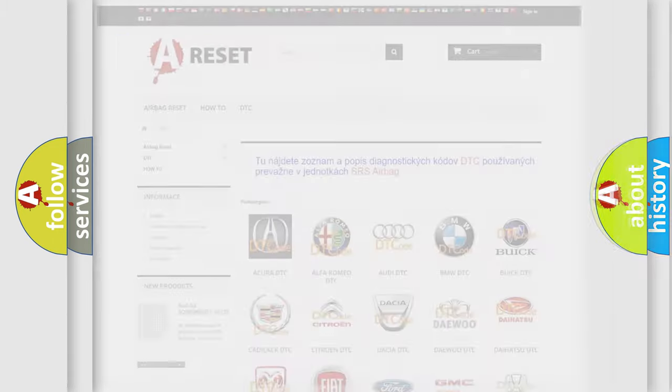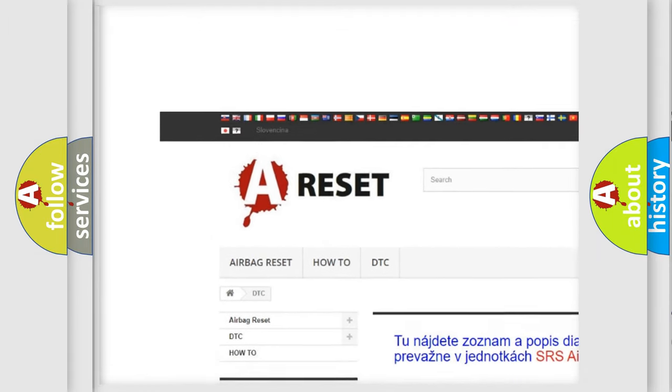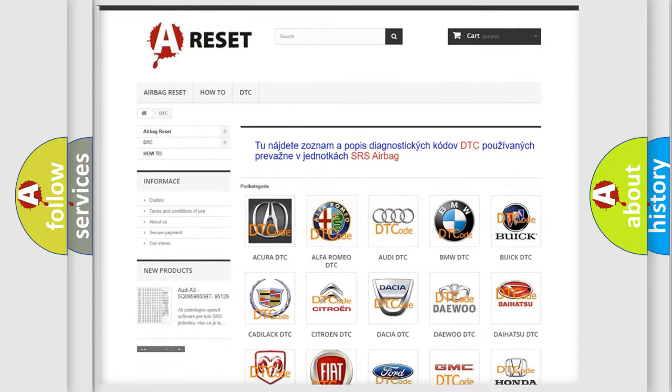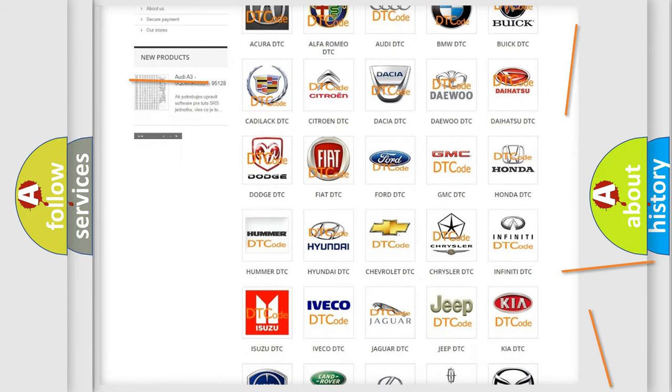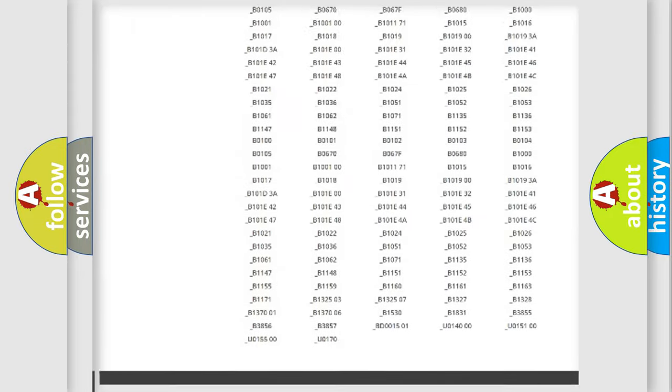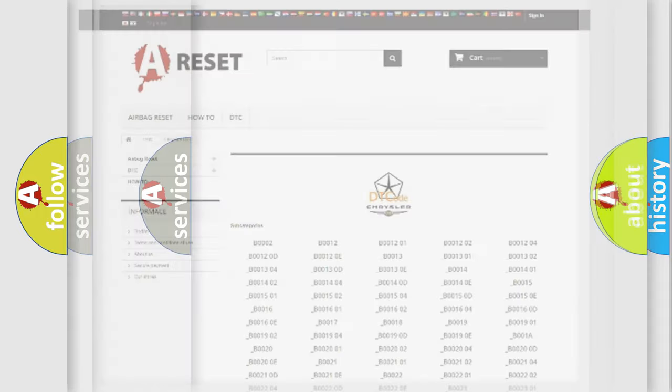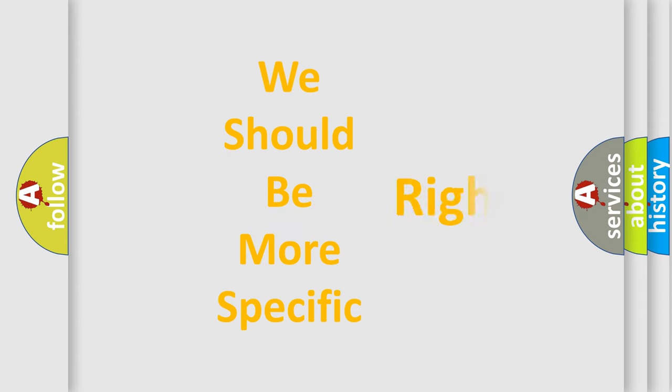Our website airbagreset.sk produces useful videos for you. You do not have to go through the OBD2 protocol anymore to know how to troubleshoot any car breakdown. You will find all the diagnostic codes that can be diagnosed in Chrysler vehicles, and also many other useful things. The following demonstration will help you look into the world of software for car control units.